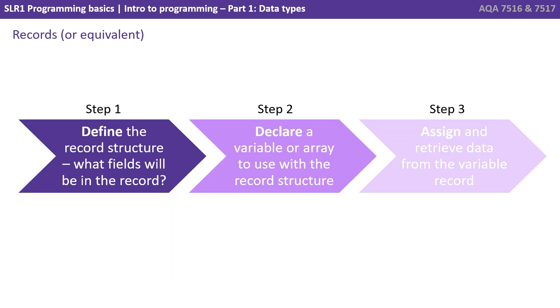There are three main steps when using the record data type. Step one, define the record structure. What fields are going to be in it? Step two, declare a variable or an array to use with the record structure. Step three, assign and retrieve data from the record.